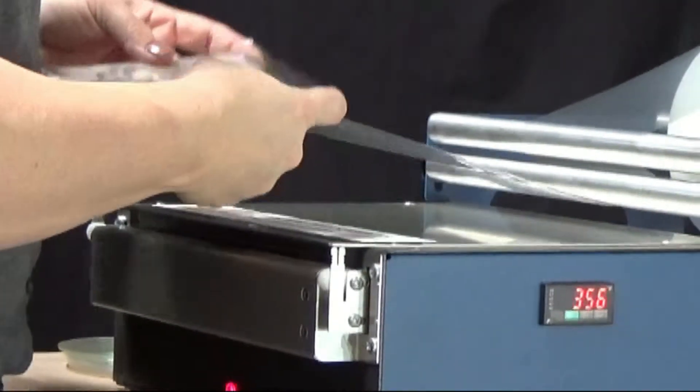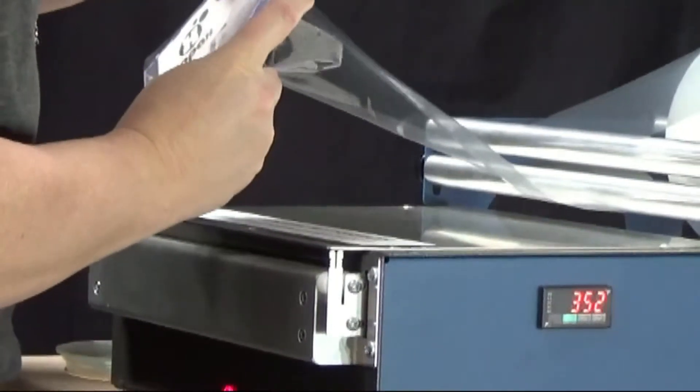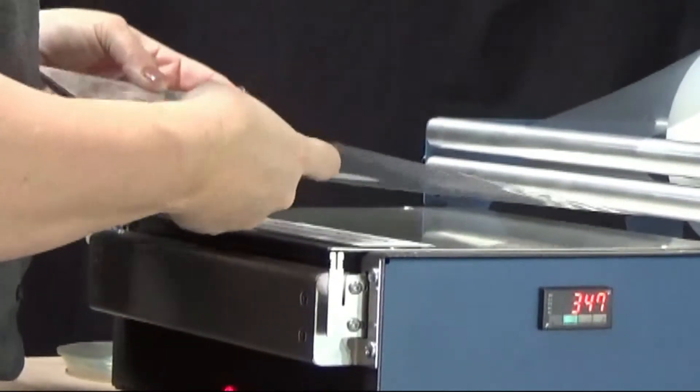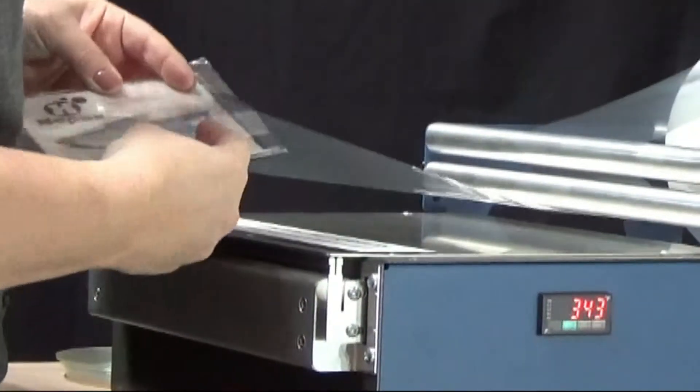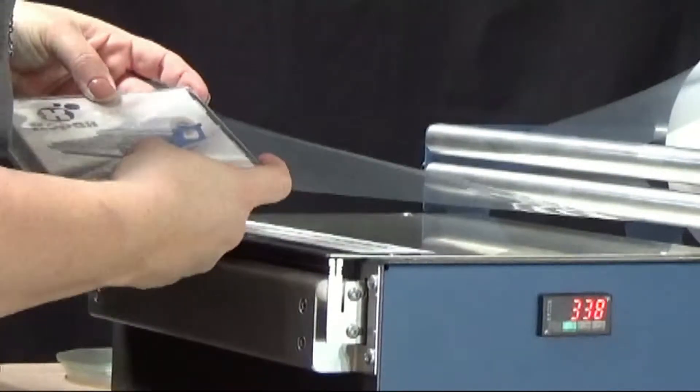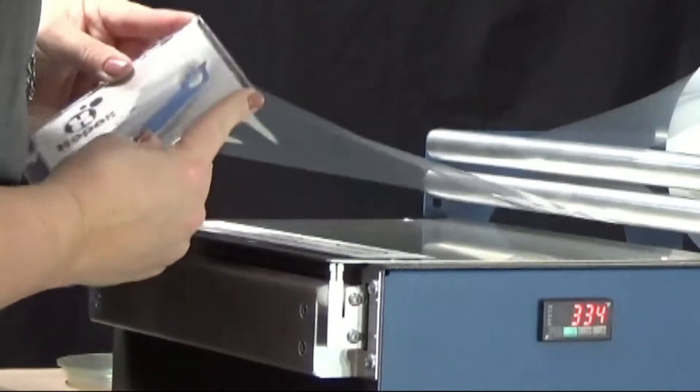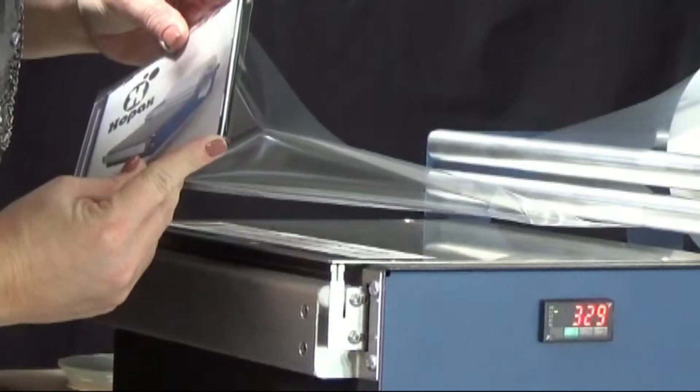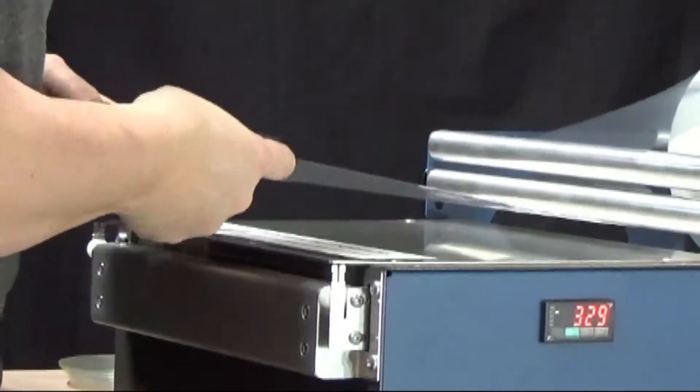But what's unique on the slimline case is because the profile is so narrow, you actually approach it a little bit differently. So on a jewel case, I would fold that over and make sure everything was flat. On a slimline, you can see it kind of goes over, and that's okay, and I'm going to show you why.